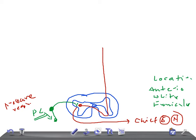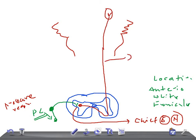After crossing, the fibers ascend through the spinal cord and brain stem — first the medulla, then the pons, then the midbrain — and ultimately reach the thalamus. The second order neuron runs from the chief sensory nucleus all the way to the thalamus. From the thalamus to the sensory cortex is the third order neuron.